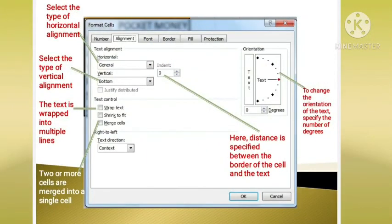In this image, you can see alignment tab of the format cell dialog box. In this dialog box, on the top left, you can see the horizontal alignment. Below that is vertical alignment. Below vertical alignment, you can see wrap text option where you can wrap multiple lines. And below wrap text option, you can see merge cell where you can merge more than two or three cells together into a single. On the top right hand side, you can see to change the orientation of the text, specify the number of degrees. Below that, on the right hand side corner, you can see the distance is specified between the borders of the cell and the text.